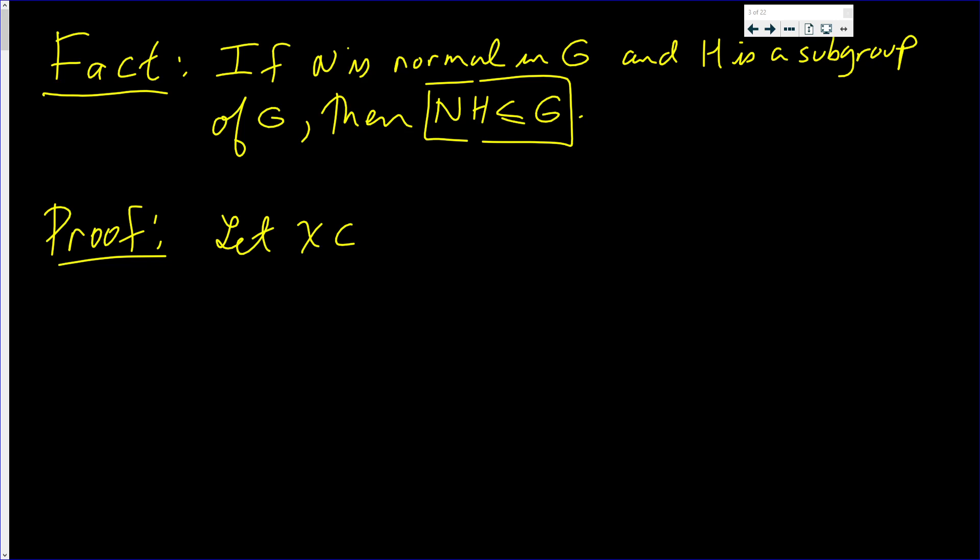So let X be in NH, and also let Y be in NH. Well, this implies that X is nh for some n in the normal group N, and h in subgroup H.